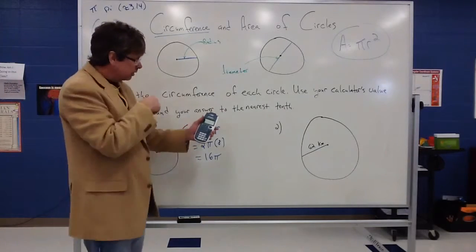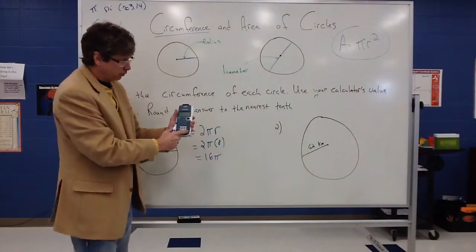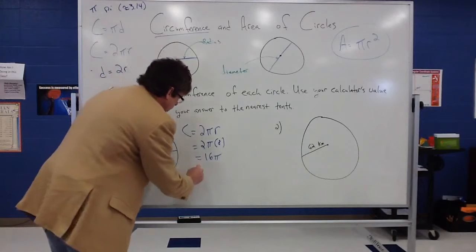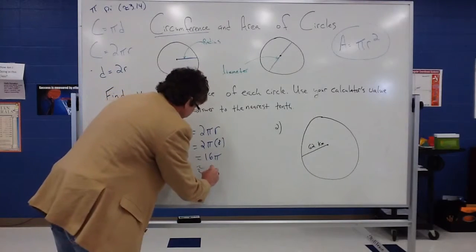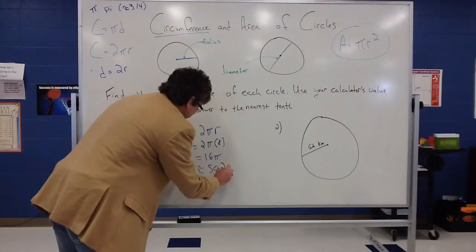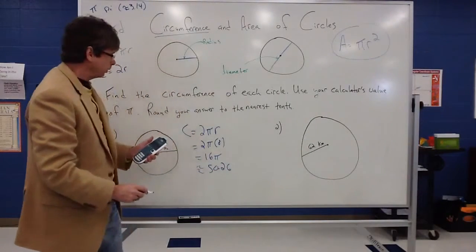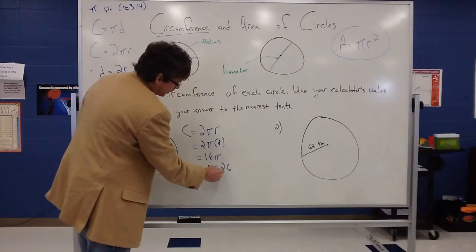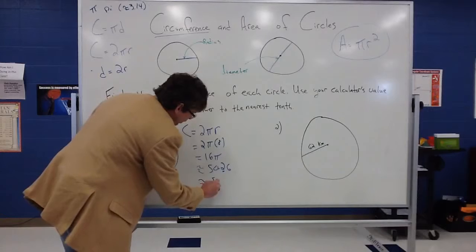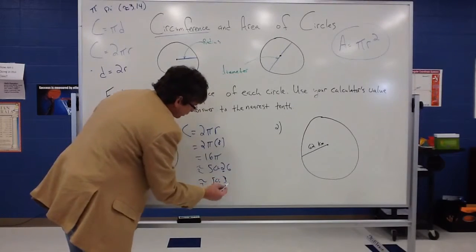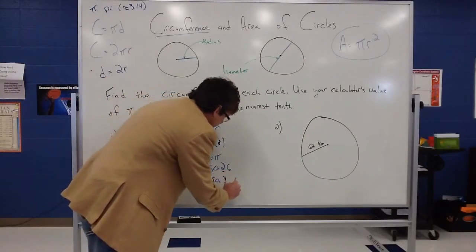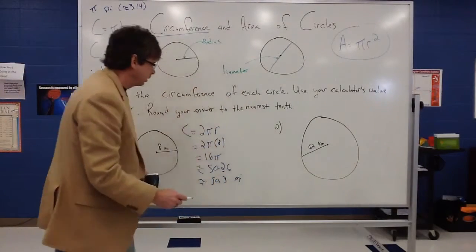But the directions say round to the nearest tenth. So I actually got to use that little toggle button that changes it to a decimal notation for me. So again, I'm going to have an approximation of 50.26. And since it says round to the nearest tenth, that's this place value here. So that's going to round to then 50 and 3 tenths. And since we're dealt with miles, we will use miles as our measurement there.